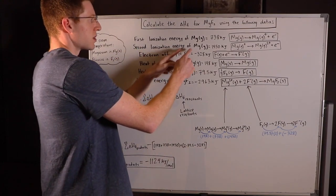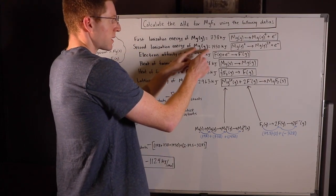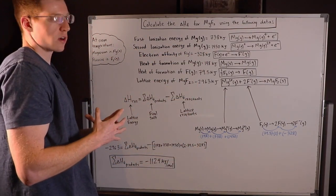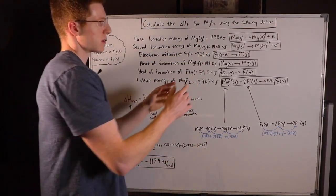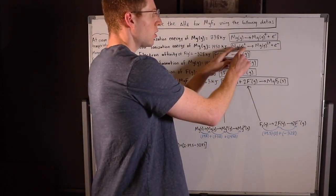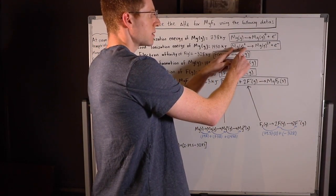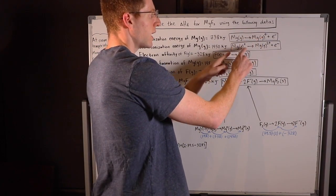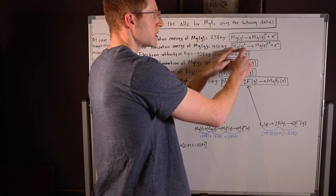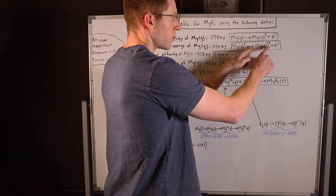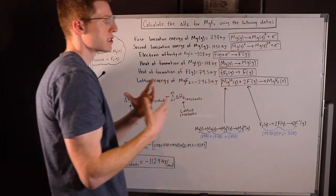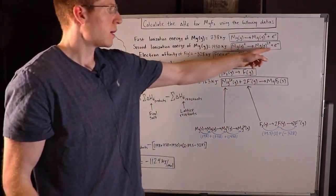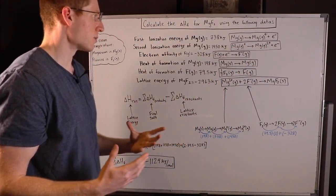The second ionization energy of magnesium gas is stealing the second electron from magnesium. So now it's already magnesium gas plus — we already took one away. We're going to take the second electron away, so now it's going to be magnesium gas two plus, plus that electron that we stole.